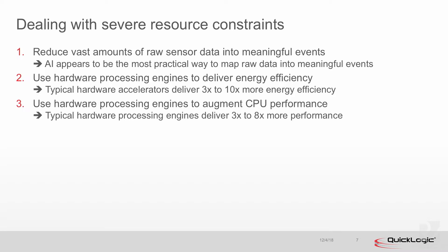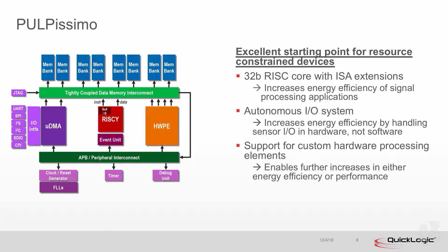One solution is moving data from raw sensor data down to meaningful events — you don't want to be shipping a lot over Wi-Fi or even BLE. So you use AI to reduce data down to meaningful events and ship only those. The other thing is using hardware processing engines to deliver energy efficiency. These devices are not going to be just CPUs; they'll have specialized hardware accelerators that, in our experience, give you maybe three to ten times more energy efficiency. You also use them to augment CPU performance for peak loads.